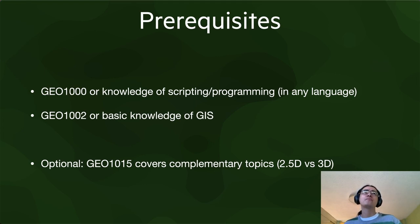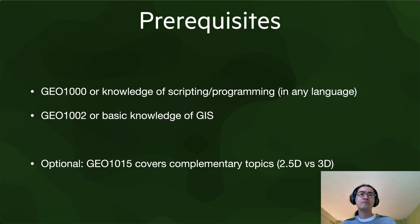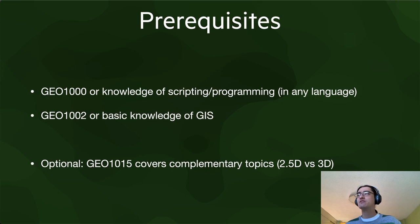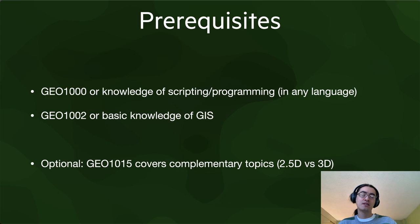The prerequisites for this course are Geo 1000 or some kind of knowledge of scripting or programming in any language. For those of you who are Geomatics students, there's the Python programming course, which had a couple of C++ lessons at the end. It doesn't matter if it's Python, C++, or any other language — we will do our best to help you. You also need Geo 1002 or some knowledge of GIS, whether that's QGIS, ArcGIS, or anything else. We just want you to know some of the theory behind this.